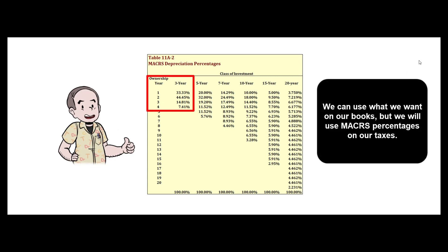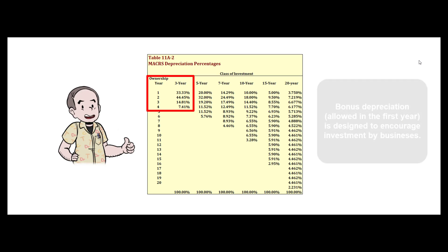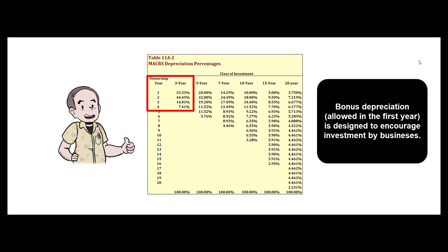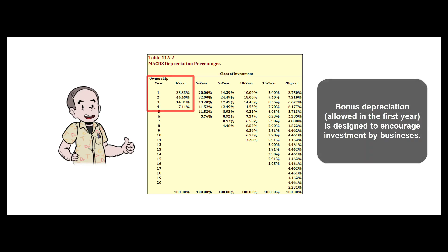There's also something called bonus depreciation. Congress always wants to encourage businesses to buy new equipment, so they allow companies to take a lot of depreciation upfront. That improves net present value because depreciation is a non-cash expense that reduces the cash cost of income taxes.